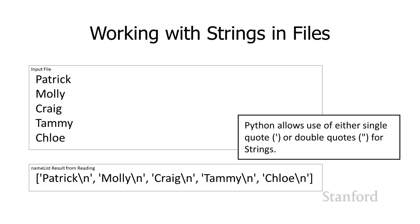You may also notice that Python marks its strings with single quotes instead of double quotes when it displays them. In Python, you can represent strings with either single quotes or double quotes. I've been using double quotes because most programming languages use double quotes, and getting used to single quotes would be a bad habit. However, when Python spits strings back to you in the Python shell, it always uses single quotes.